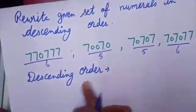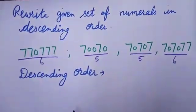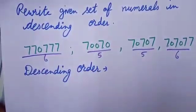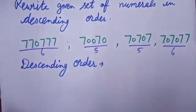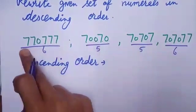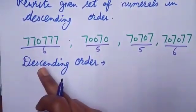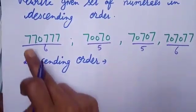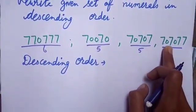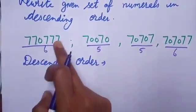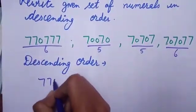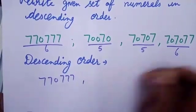In descending order, firstly I will write the greatest numeral. Between these two 6-digit numerals, I will compare the digit at the 10,000 place — both are the same. Then I will compare the digit at the 10,000 place: here 7 is at the 10,000 place and here 0 is at the 10,000 place. It means this numeral is the greatest among them, so I will write this numeral first, then this one.